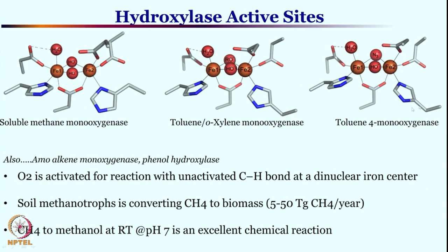With toluene or xylene as a substrate, the monoxygenase of toluene or xylene has a similar active site wherein toluene or xylene will be hydroxylated. For toluene you can have ortho hydroxylation, meta hydroxylation, or para hydroxylation. This is the enzyme active site for toluene para-hydroxylation, or toluene 4-monooxygenase. Essentially, these hydroxylases are a group of enzymes capable of hydroxylating organic substrates — aliphatic or aromatic.